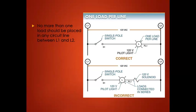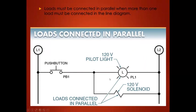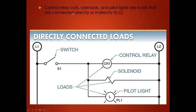No more than one load should be placed on any circuit line between L1 and L2 — only one load per line. If you need two loads controlled by the same push button, put them in parallel, meaning a branch circuit around the other load. Control relay coils, solenoids, and pilot lights are loads that are connected directly to L2. CR1 is connected directly to L2; solenoid and pilot light directly to L2.